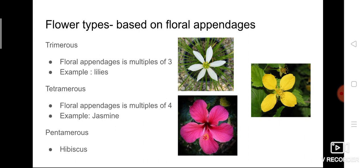We can classify flowers in different ways: based on petal arrangement called estivation, based on the number of petals called floral appendages, or based on gametes — male or female. Today's class covered estivation and its types, how plants are classified based on sex organs, and how they are classified based on floral appendages. Go through all the videos of this lesson once more to get a clear picture of the whole lesson.